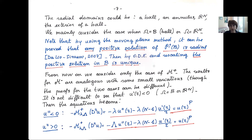From now on I will consider the case of M plus to avoid repeating all results for both operators — the results are very similar. In the radial setting our PDE reduces to an ODE, and by classical ODE results it is not difficult to prove that the first derivative of the solution is negative as long as the solution stays positive. This tells us there are n minus 1 eigenvalues which are negative.